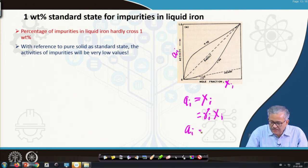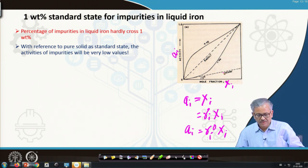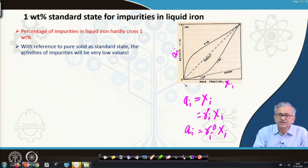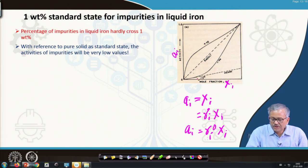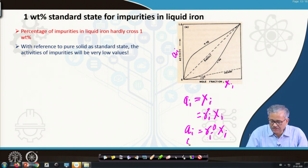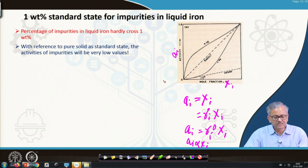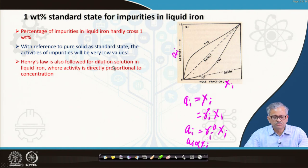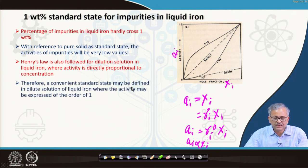In the case of dilute solution, we can write activity as gamma_i-naught times x_i, where gamma_i-naught is the Henry's law activity coefficient. Since Henry's law gives a straight-line relationship between activity and mole fraction in this range, it is advantageous to define another convenient standard state for dilute solutions. A convenience standard state may be defined where activity is directly proportional to composition.